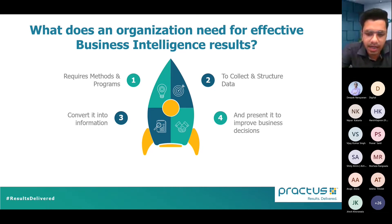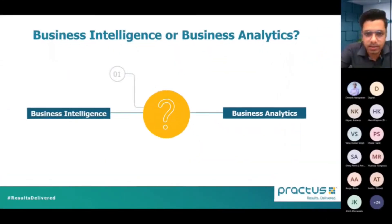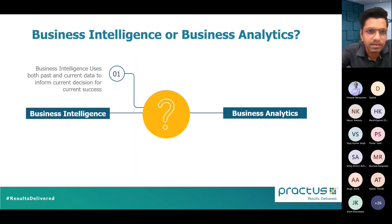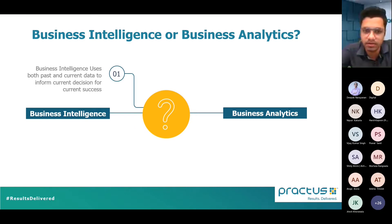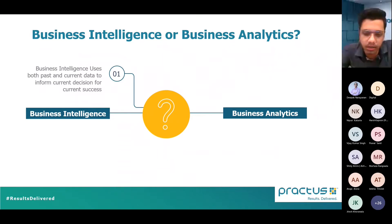You convert data into information and present it to improve business decisions. This is what companies have been doing in a traditional way, but business intelligence brings it together in a very structured manner, and your company may become a data-driven company. There is a myth about business intelligence versus business analytics — they are two different definitions and not the same. Business intelligence uses past and current data to inform current decisions.